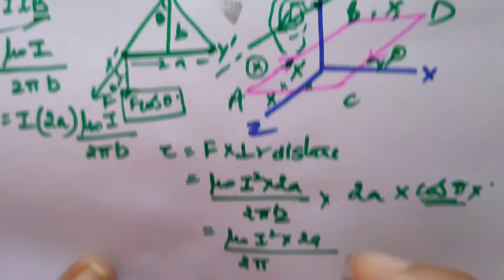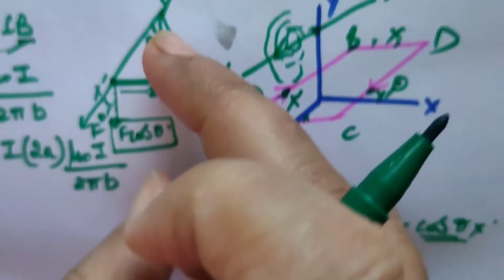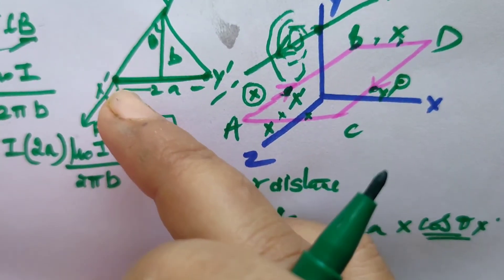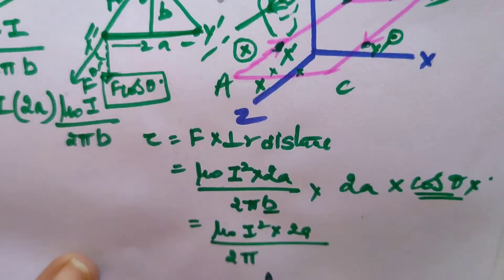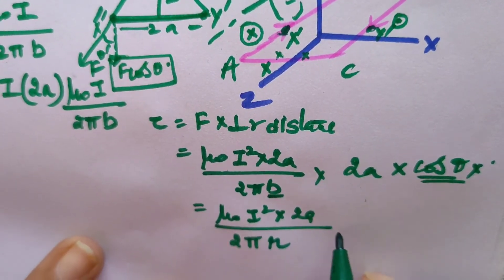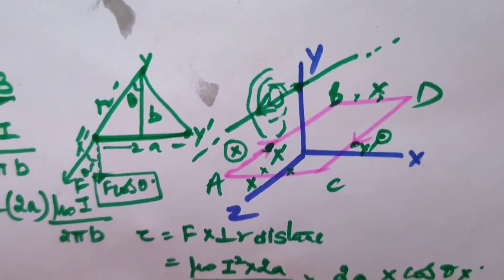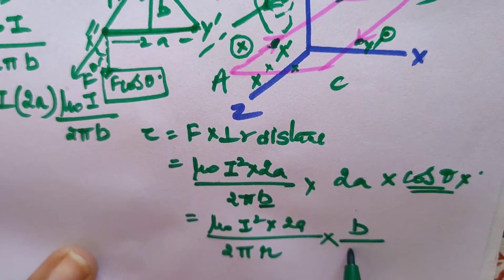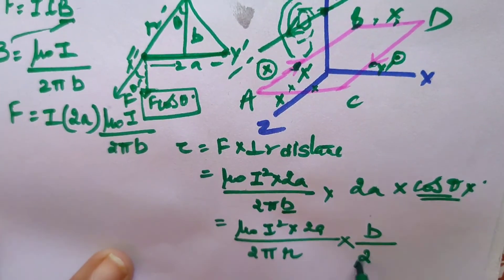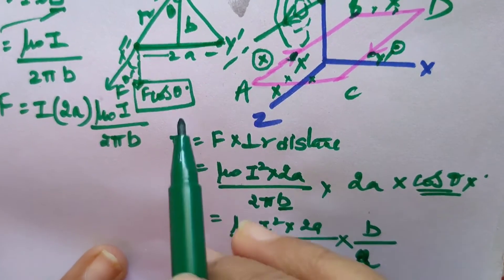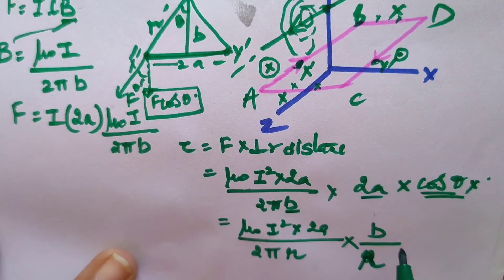For b, we have to use the distance between this wire and this point. So we cannot use b point here. We have to consider the force at x', so we are going to take the distance r. Here we will put the value r. For cos θ, this is base upon this r and for this 2a.